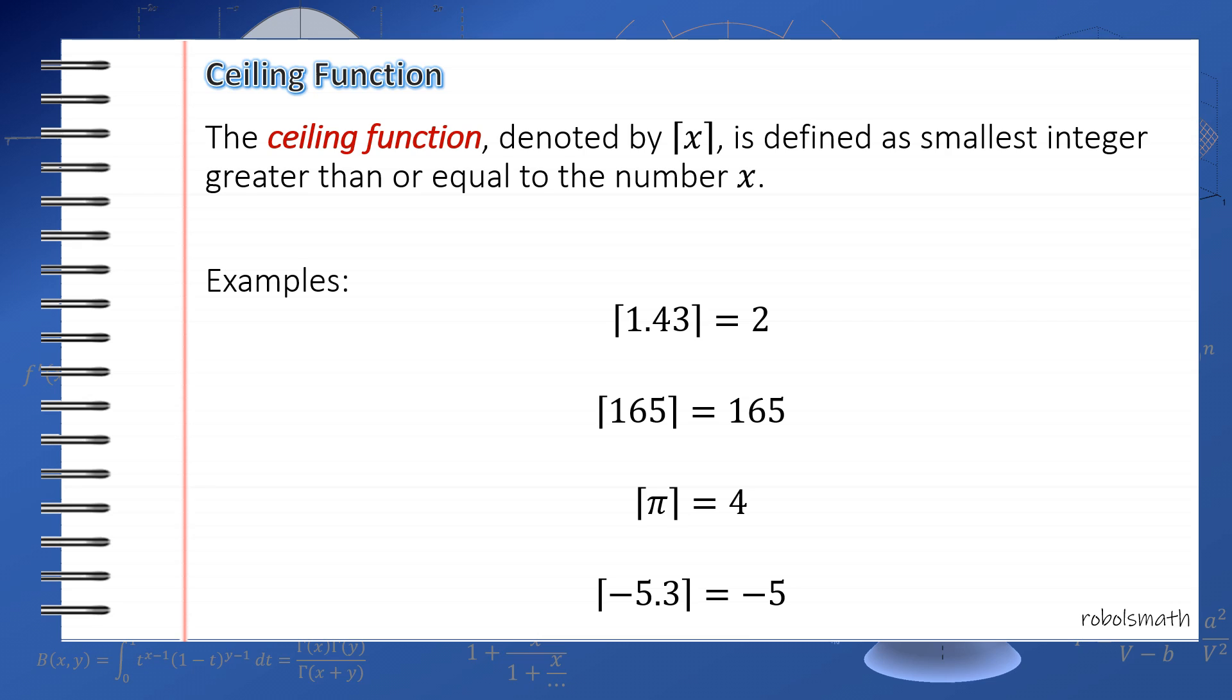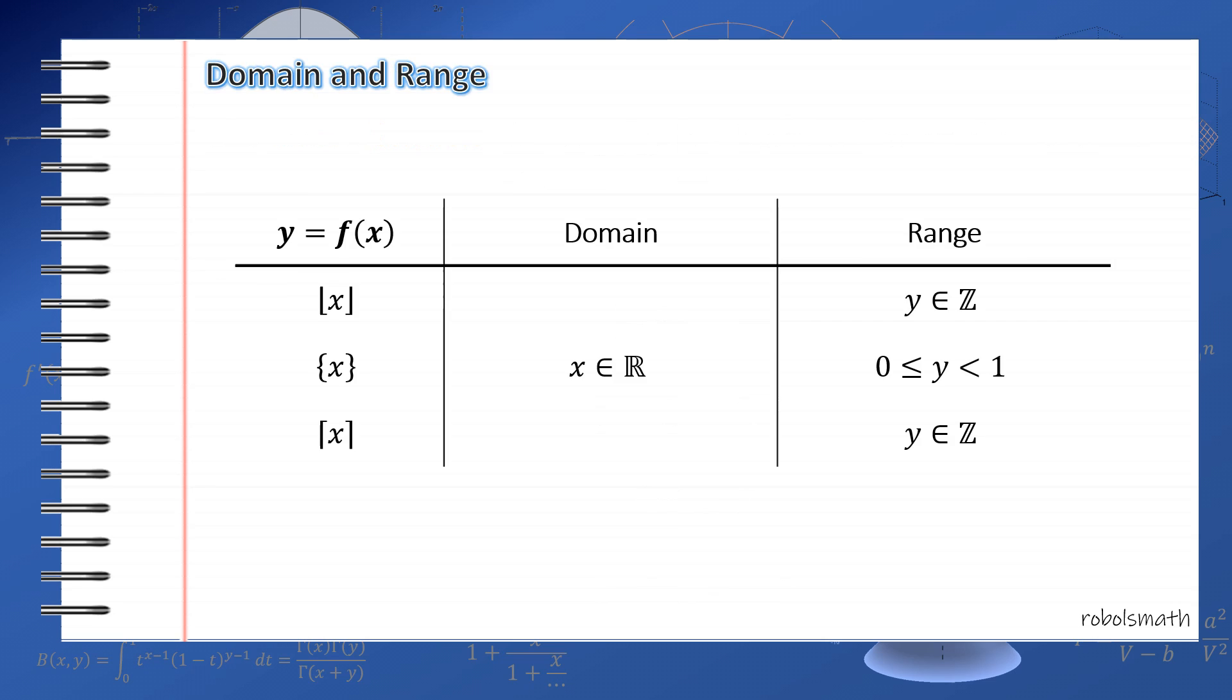So let's discuss the domain and range of these functions. If you forgot, let's recall, domain is the set of all permissible values of x, while the range is the set of all permissible values of y. Now, the domain and range of floor and ceiling functions are the same. Their domain, actually all of them have the same domain, is all real numbers. This means you can plug in any real number and you'll get a value.